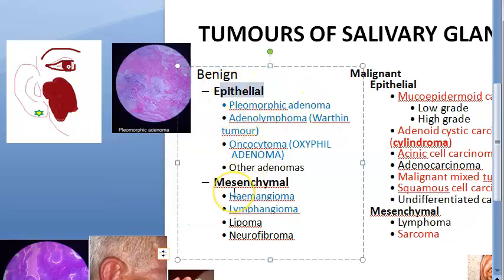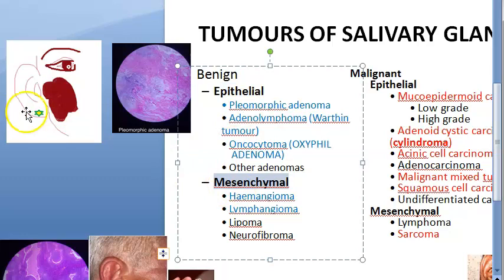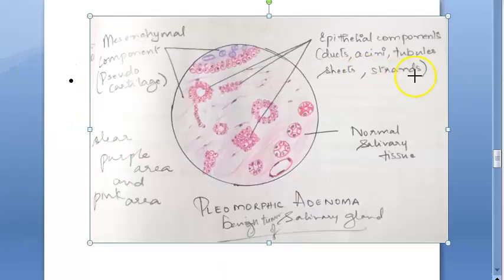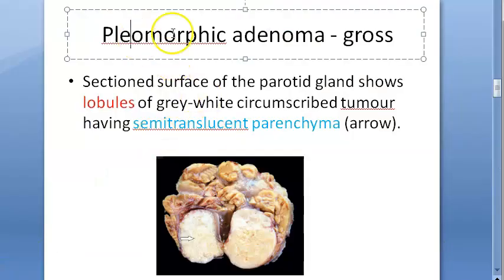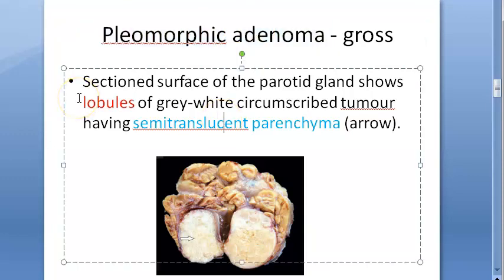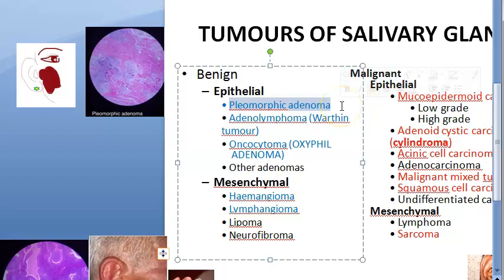The stroma of pleomorphic adenoma can be mucoid, fibroid, myxoid, chondroid — mesenchymal components — while epithelial components include ducts, acini, tubules, sheets, and strands. It arises from the tail of the parotid. Treatment involves parotidectomy with surgical excision of a margin of normal tissue around the tumor.